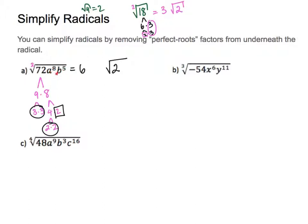Now for the variables. a is to the 8th power: 8 divided by 2 is 4, so a to the 4th power goes outside. b is to the 5th power: 2 goes into 5 a maximum of 2 times with 1 left over. So b squared goes outside and b to the 1st power goes back inside the root. That is our answer.